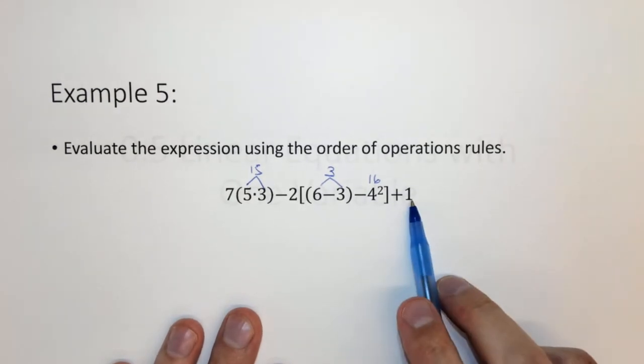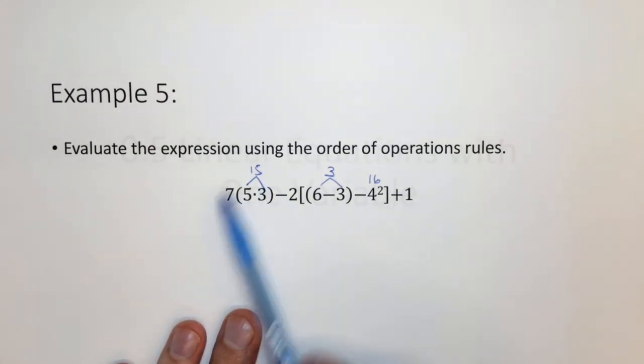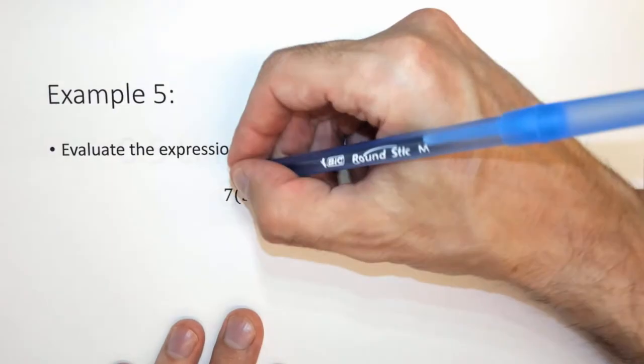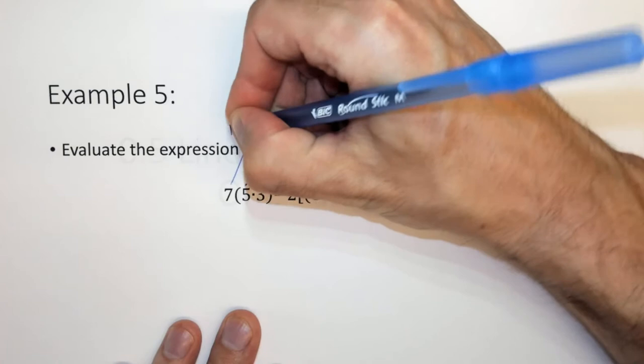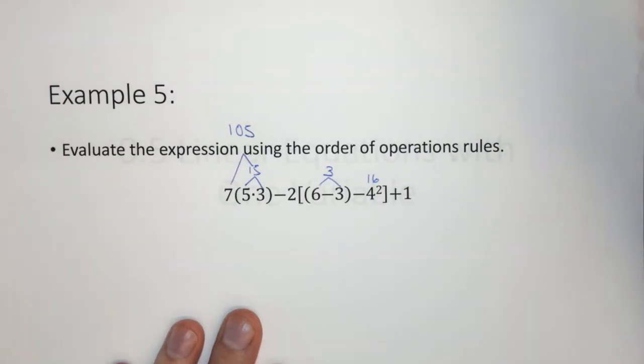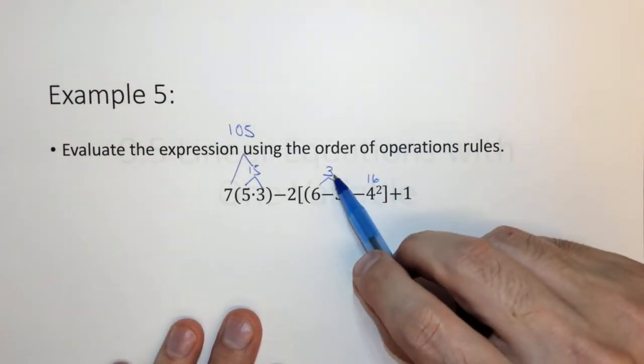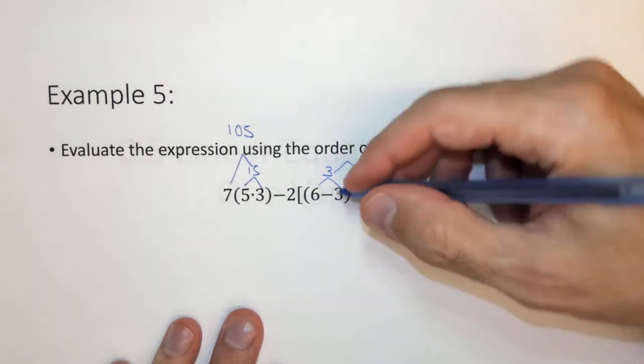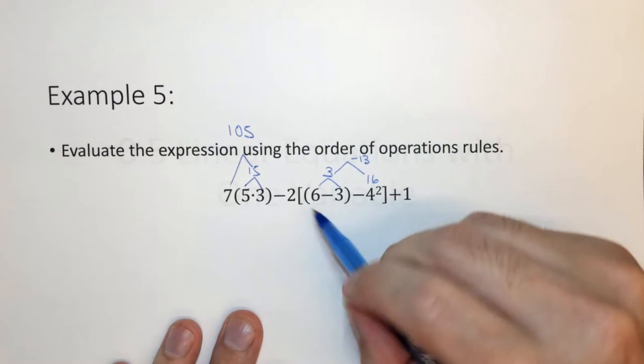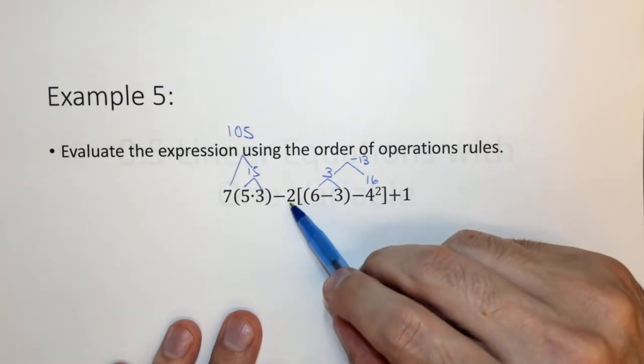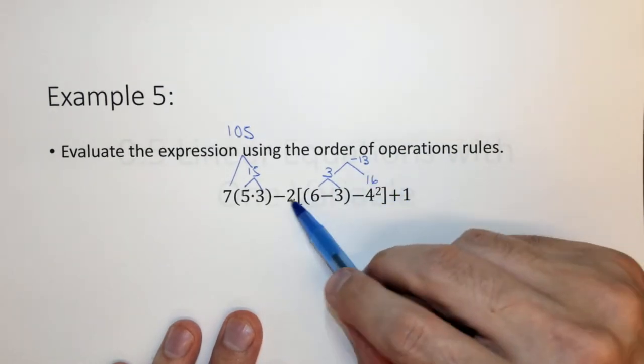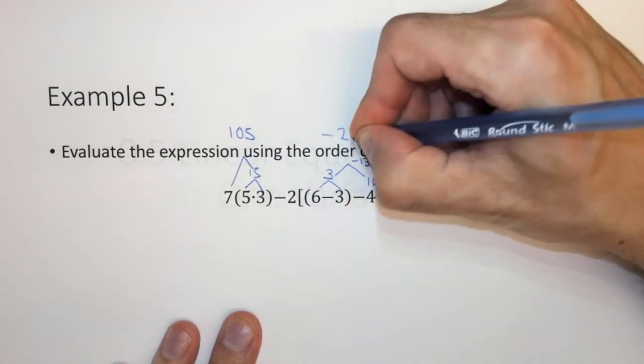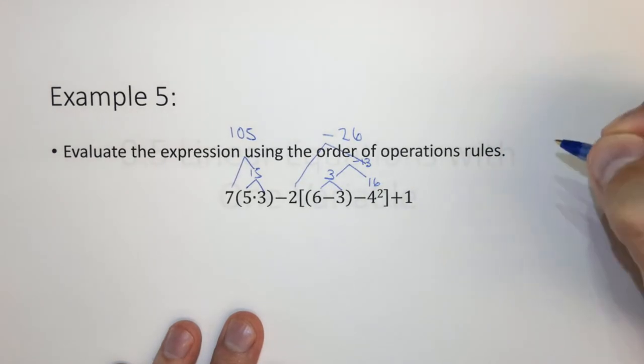And then we have this plus 1. So now we have a multiplication before we have any kind of subtraction. So we can do this. 7 times 15 is 105. Now we have a 3 minus a 16, which is going to be negative 13. And then we want to multiply that by 2. So we're going to get negative 26 when we take that and those two together.